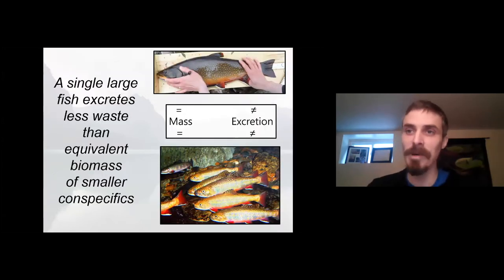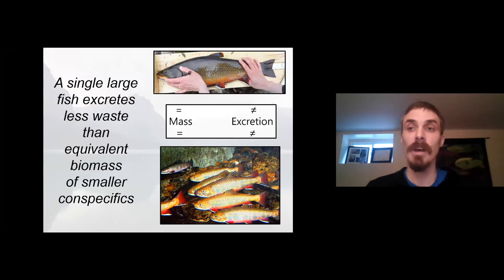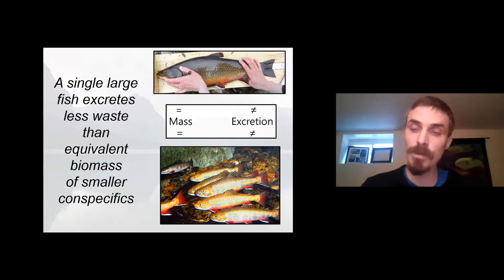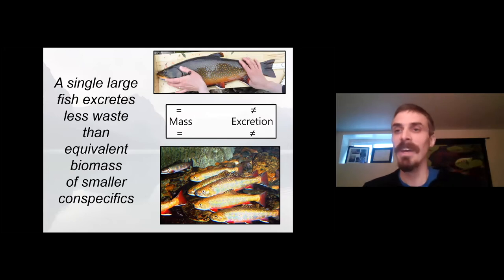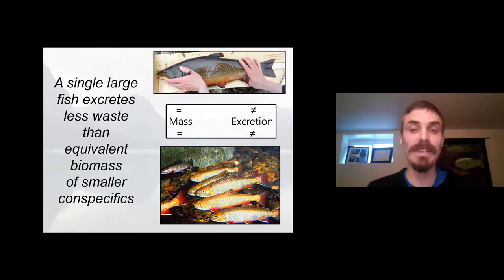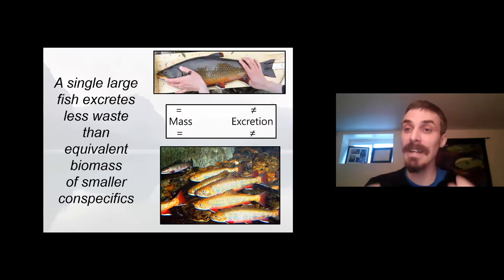What does this mean in practical terms? The metabolic theory of ecology predicts that a single large fish is going to excrete less waste than the equivalent biomass of smaller conspecifics. To highlight what I mean by that, take these two groups of fish pictured here on the screen. We have a really large individual at the top and a whole bunch of small individuals at the bottom. Let's imagine both groups have the exact same biomass. The metabolic theory of ecology would predict that even though the biomass is the same, the group on the bottom would actually excrete significantly more total waste product than the individual at the top.